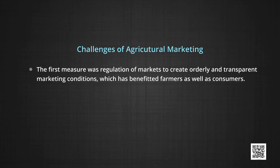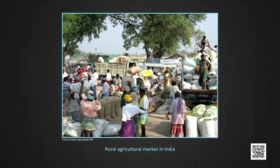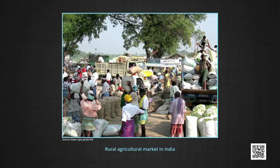What are the challenges of agricultural marketing? Let us discuss some of the measures initiated to improve the marketing aspect in agriculture. The first measure was regulation of markets to create orderly and transparent marketing conditions, which has benefited farmers as well as consumers. However, there is still a need to develop rural periodic markets as regulated marketplaces to realize the full potential of rural markets. The second component is provision of physical infrastructure — facilities like roads, railways, warehouses, godowns, cold storage, and processing units.